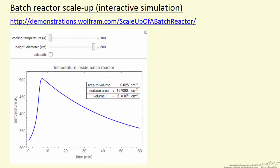I've taken a snapshot. What we can change is the cooling temperature and the height of the reactor, and the height and diameter are equal. We're plotting the temperature in the reactor as a function of time.